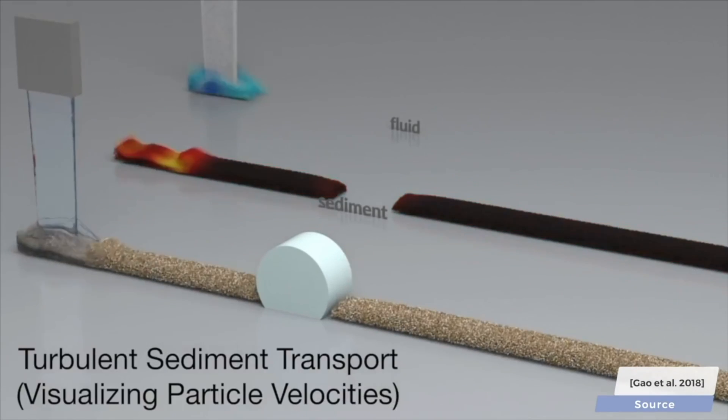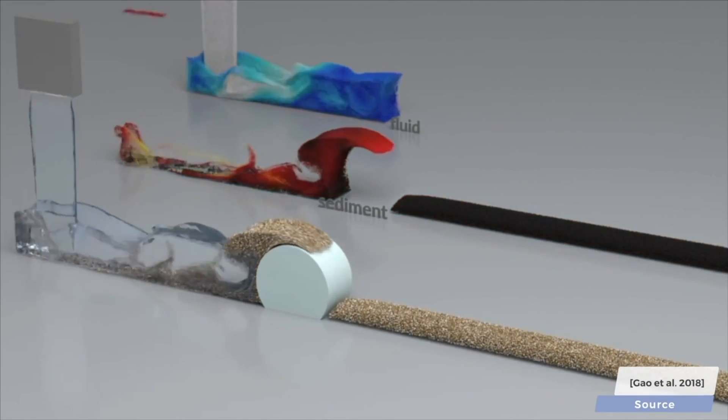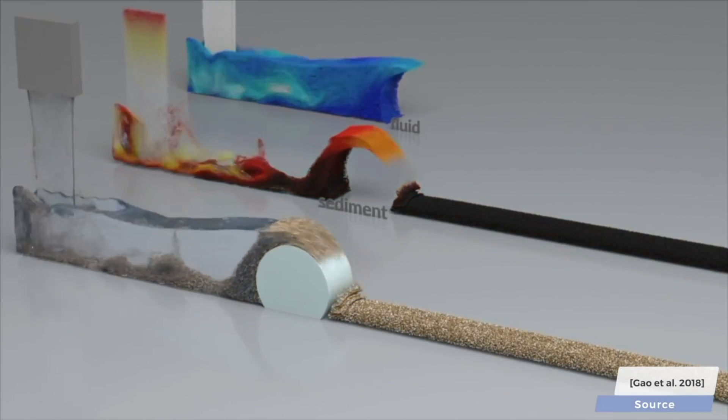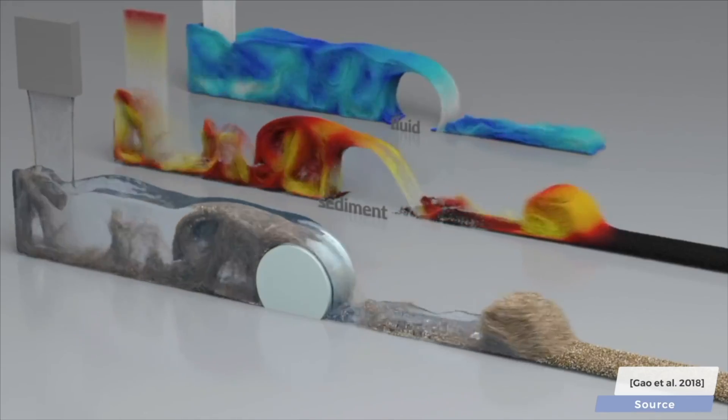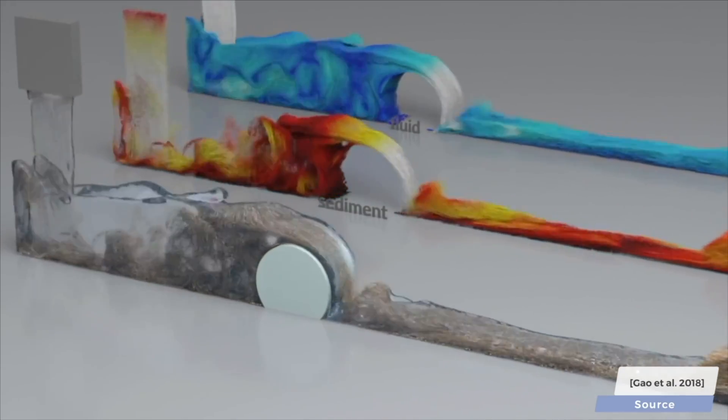This means that the sand is allowed to have an effect on the fluid, but at the same time, as the fluid sloshes around, it also moves the sand particles within. This is what we refer to as two-way coupling.